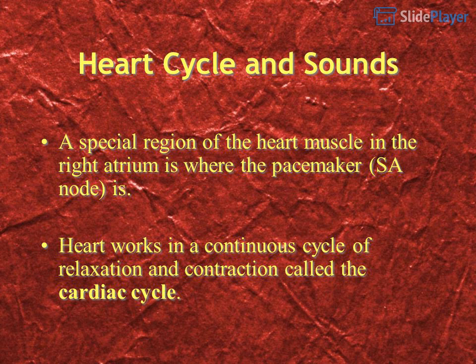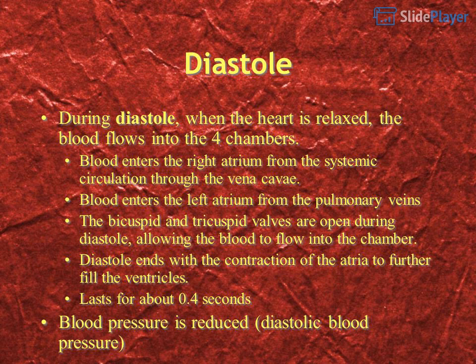A special region of the heart muscle in the right atrium is where the pacemaker is located. The heart works in a continuous cycle of relaxation and contraction called the cardiac cycle. During diastole, when the heart is relaxed, blood flows into the four chambers. Blood enters the right atrium from the systemic circulation through the vena cavae, and blood enters the left atrium from the pulmonary veins. The bicuspid and tricuspid valves are open during diastole, allowing blood to flow into the chambers. Diastole ends with the contraction of the atria to further fill the ventricles, and lasts about 0.4 seconds. Blood pressure is reduced — this is diastolic blood pressure.